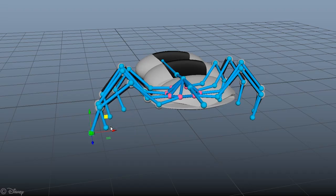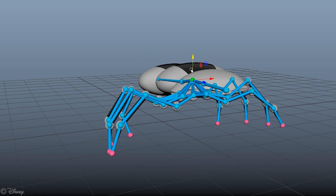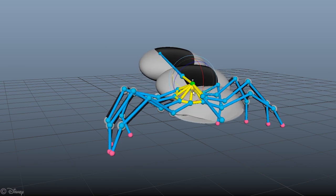Our system is not limited to human models. It can also be used to manipulate any type of character, like this spider robot.